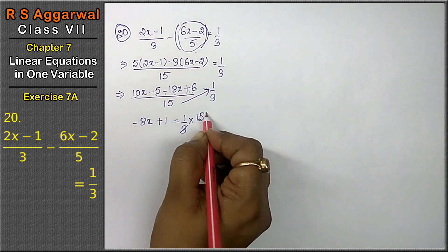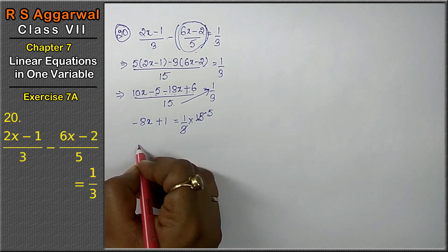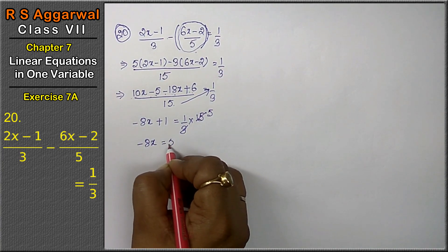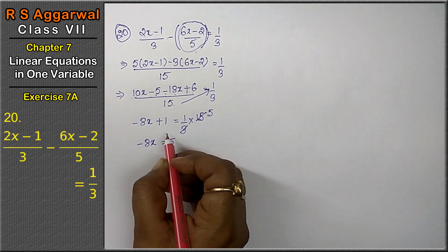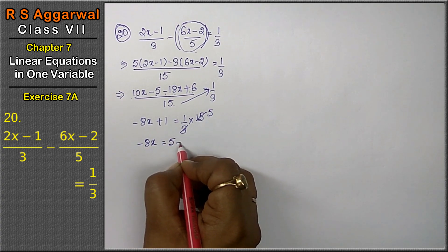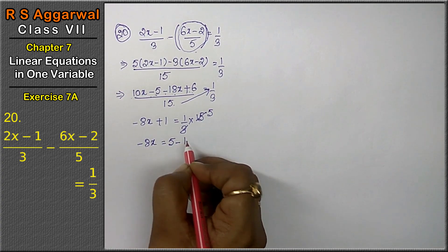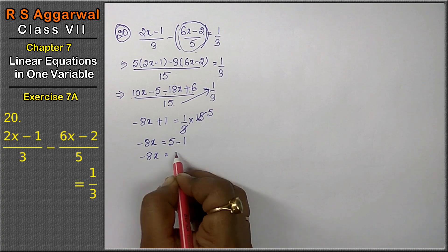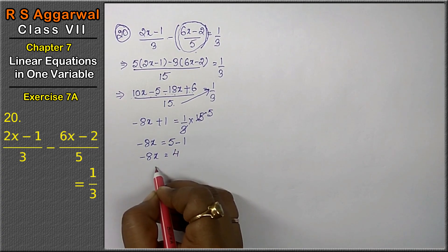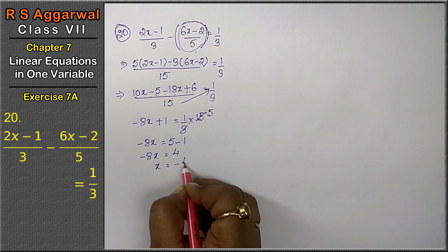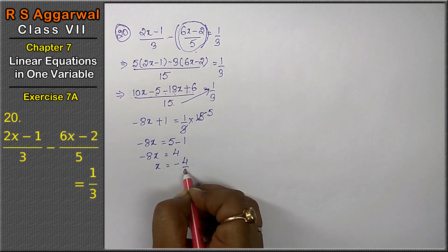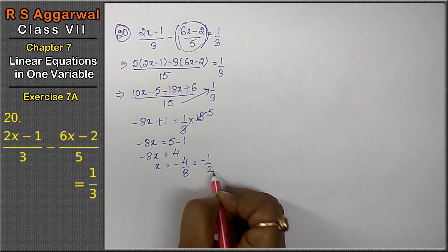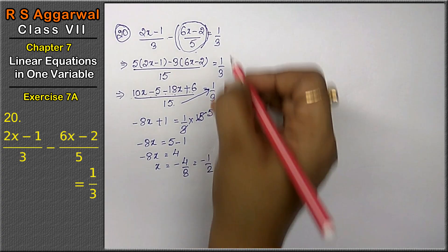Multiplying both sides: 1 upon 3 into 15 — 3 ones are 3, 3 fives are 15 — so minus 8x equals 5, that is minus 8x equals 4. Therefore x equals minus 4 upon 8, which is minus 1 upon 2. That is the answer.